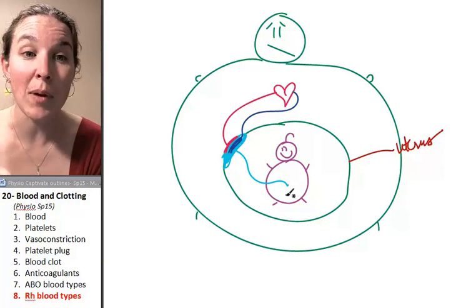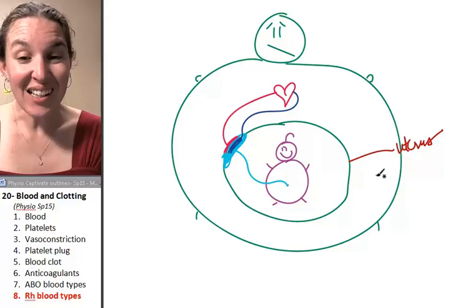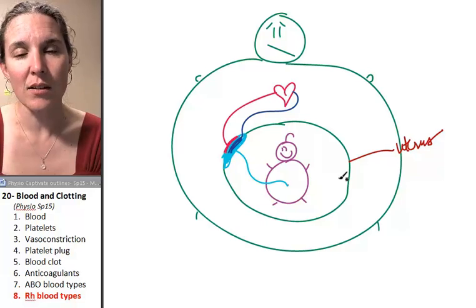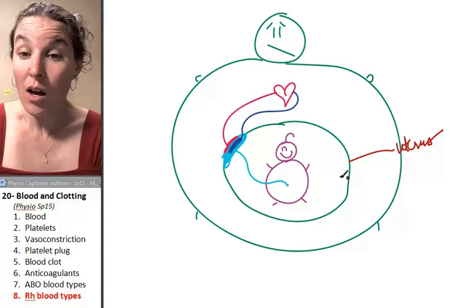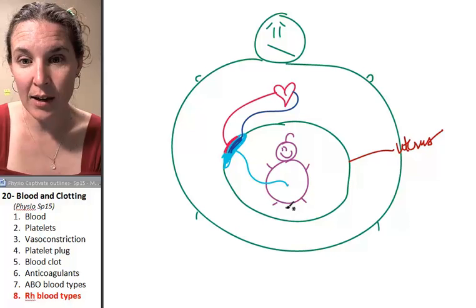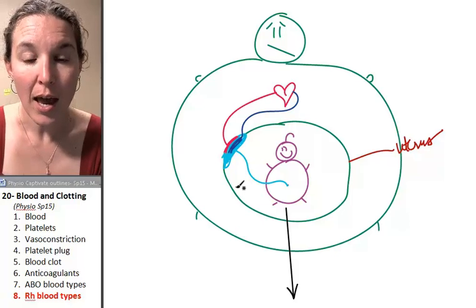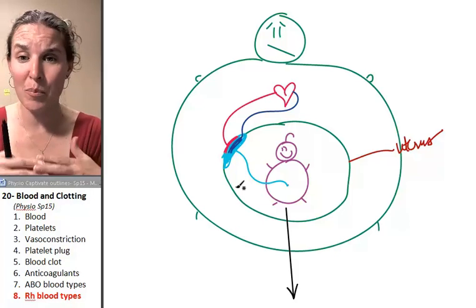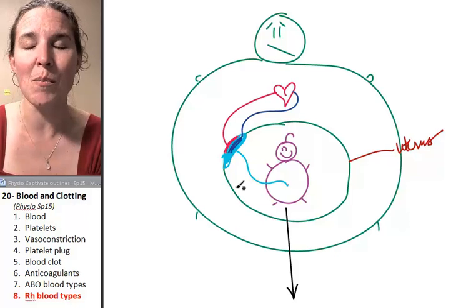Mama blood and baby blood never mix. Until, are you ready for this? Sorry, ladies, if you have not yet spawned parasites out of your uterus. Once you do push that little parasite out of your body, the placenta rips off of the wall of the uterus. And it's pretty much guaranteed that there will be a bloody mess when the baby gets pushed out and blood will mix.